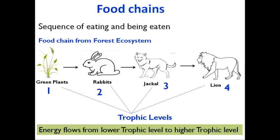The energy always flows from a lower trophic level to a higher trophic level in any food chain. If we look at this diagram, we can easily see that energy is transferring from green plants to rabbits, from rabbits to jackals, and from jackals to lions — so from lower trophic level to higher trophic level. The energy flow will always be in this manner.